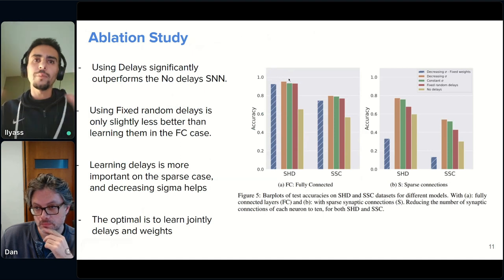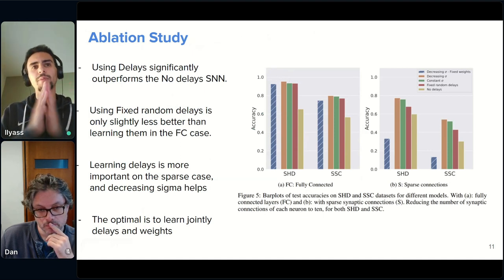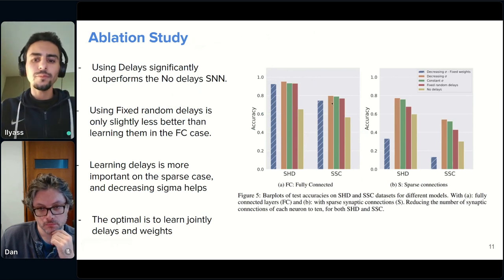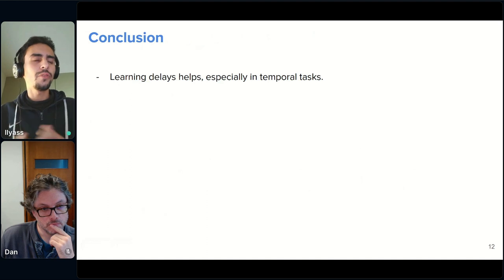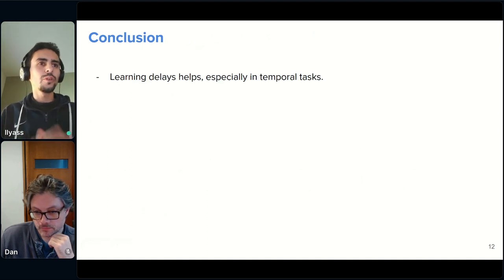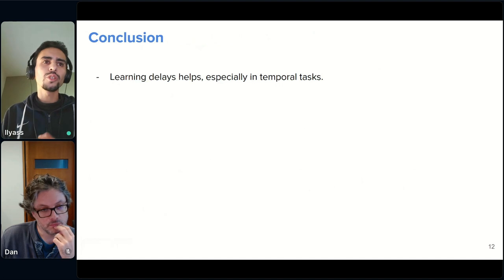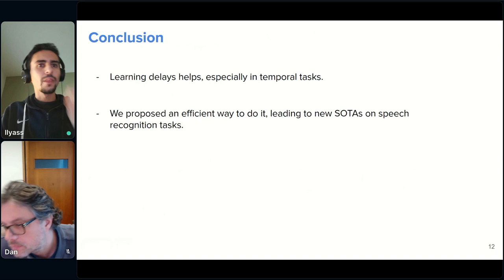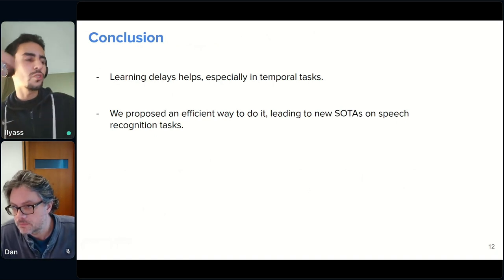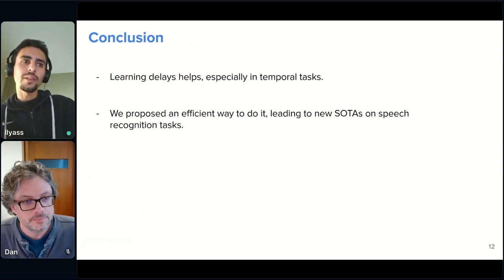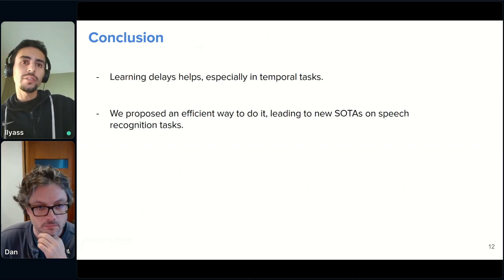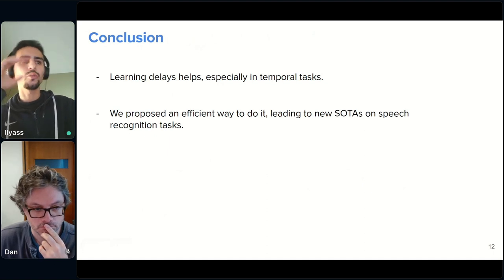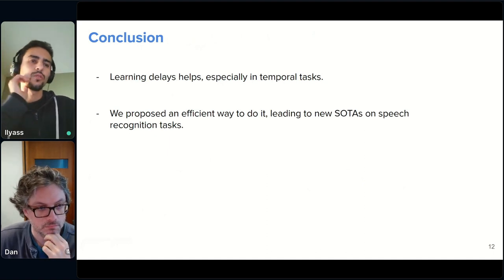But in the end, the optimal way in both cases is to learn both delays and weights jointly. And using the decreasing sigma strategy instead of having a thin sigma from the beginning, because it allows to catch a lot of temporal dependency. I don't know if I did the talk too fast, but just to conclude and to remind, make a summary. So we showed that learning delays helps, especially in temporal tasks. And we proposed an efficient way to do it, which led to new state of the art results on speech recognition tasks, both neuromorphic tasks and non-neuromorphic tasks.